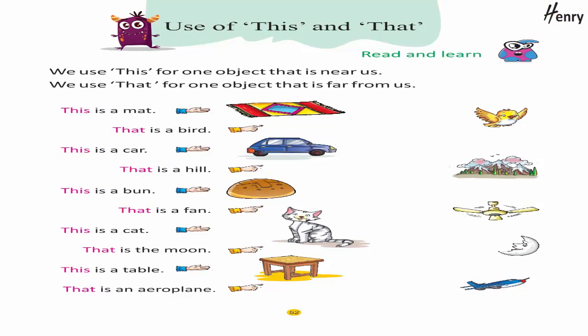Use of this and that: We use 'this' for one object that is near us. We use 'that' for one object that is far from us. This is a mat — that is a bird. This is a car — that is a hill. This is a bun — that is a fan. This is a cat — that is the moon. This is a table — that is an aeroplane.